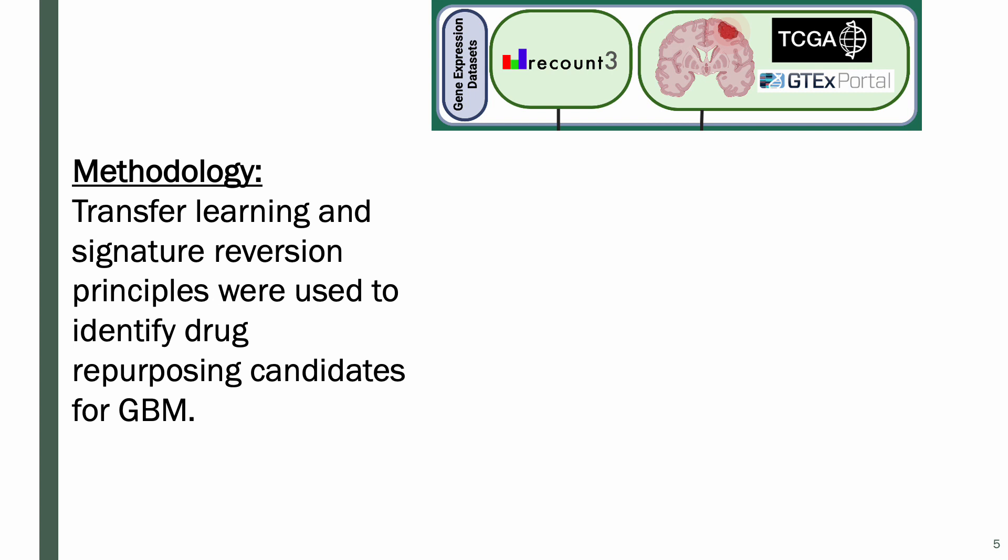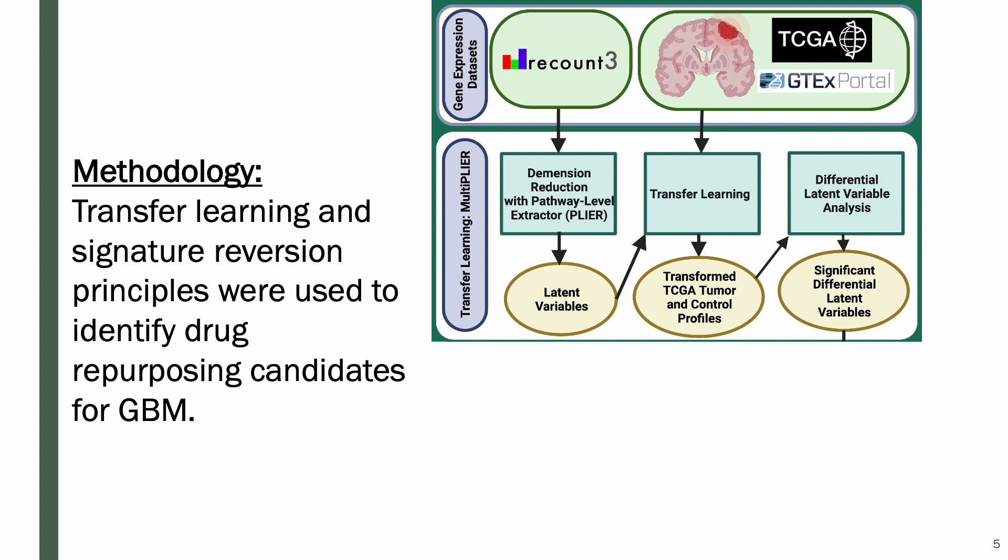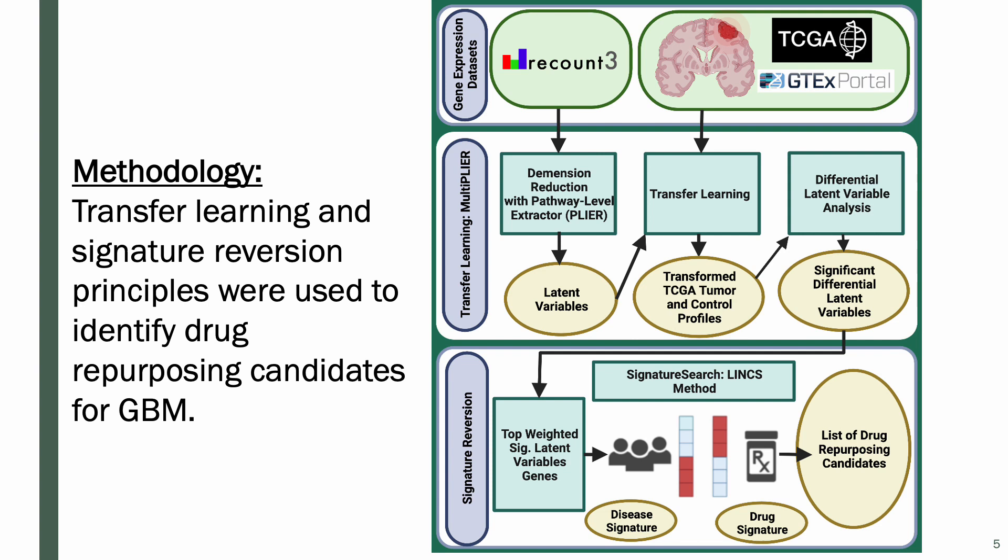In this project, we applied the transfer learning signature reversion principles to identify drug repurposing candidates for GBM. We took gene expression profiles from the Recount3 database, which includes the Cancer Genome Atlas and GTEx data, and used that as inputs to the transfer learning multiplier framework, where dimensionality reduction identified latent variables. These latent variables were used in transfer learning to transform the tumor and control profiles — instead of looking at raw gene expression, we're looking at patterns of gene expression across samples. Differential latent variable analysis then identified which patterns differ between disease and control, and the top-weighted genes were used in the signature reversion principle to identify drug repurposing candidates for GBM.